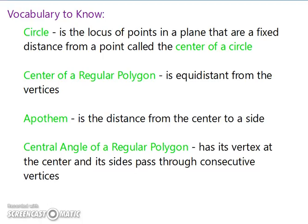Let's look at some vocabulary. A circle is the locus of points in a plane that are a fixed distance from a point, and that point is called the center of a circle. The center of a regular polygon is equidistant from the vertices. The apothem is the distance from the center of the polygon to a side — remember, anytime you're going from a point to a line, the shortest distance is always perpendicular. The central angle of a regular polygon has its vertex at the center and its sides pass through consecutive vertices.